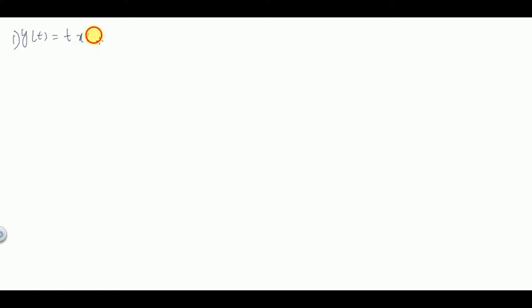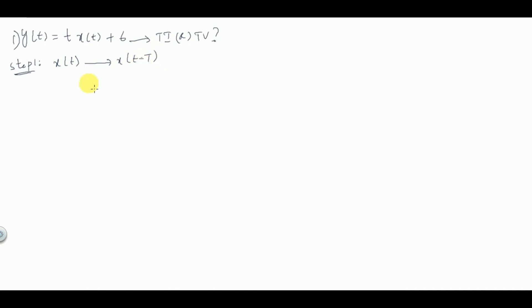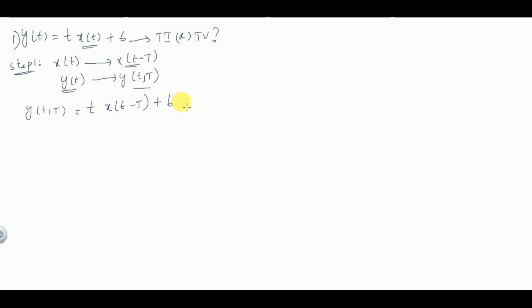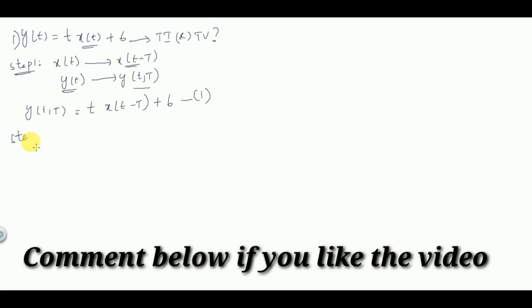Let's solve some problems. Problem one: y(t) = t · x(t) + 6. We need to find whether this system is time invariant or time variant. In step one, replace x(t) with x(t-T) and label the output y(t, T). So y(t, T) = t · x(t-T) + 6. Let this be equation number one.